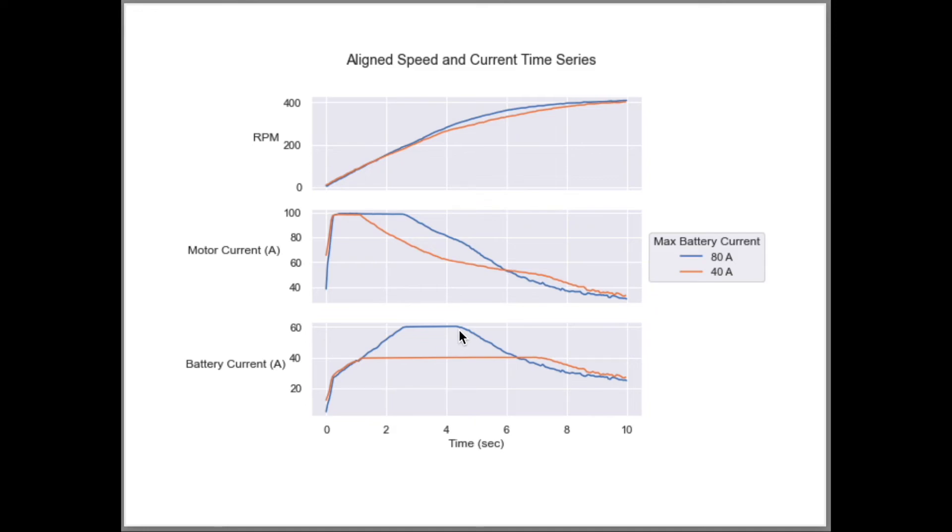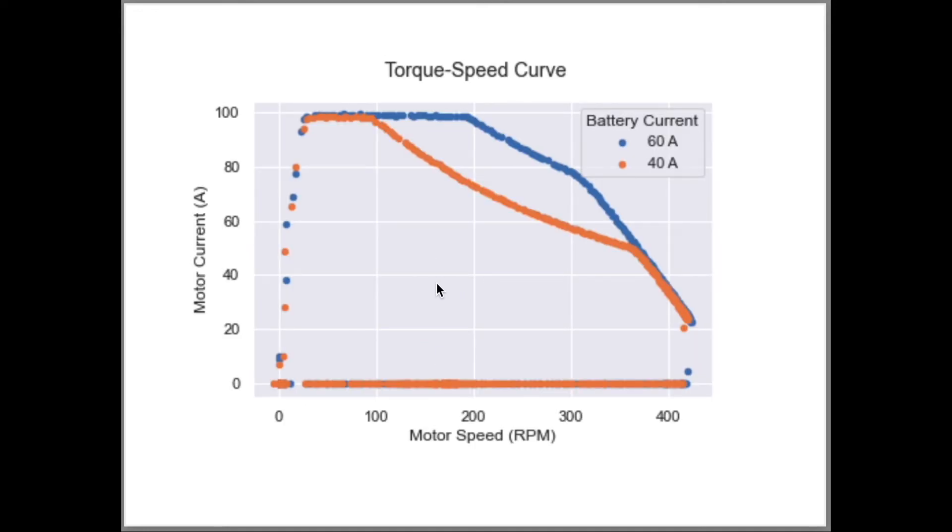Now we look at a torque speed graph instead of a time series. We see what we expect in both cases, a peak motor current of 100 amps. The 60 amp curve shows the system is able to maintain that peak current and torque to a higher RPM than the 40 amp curve.